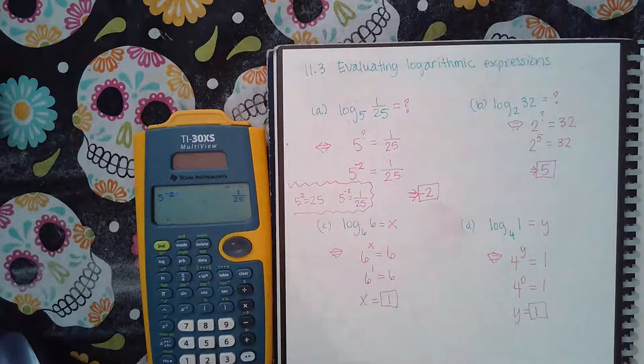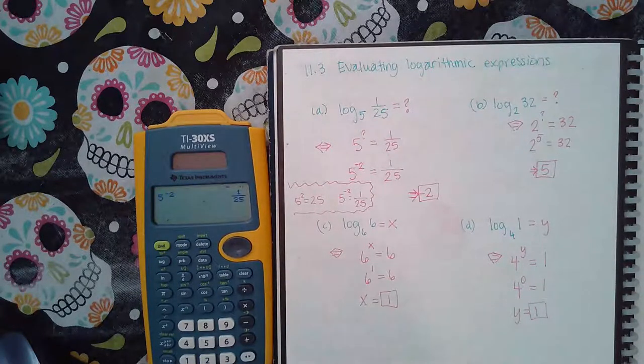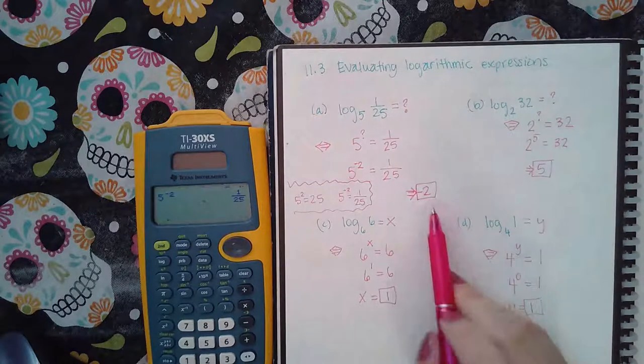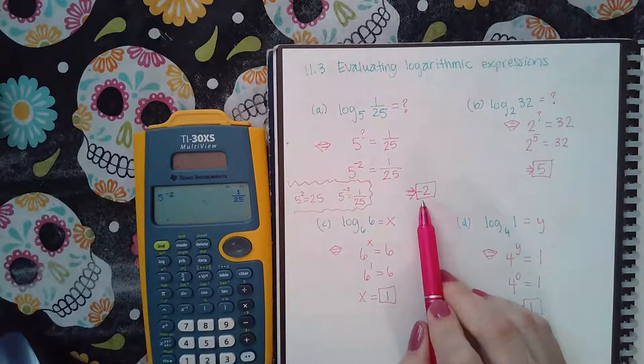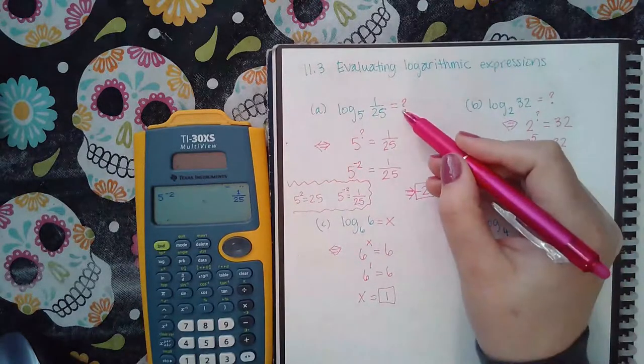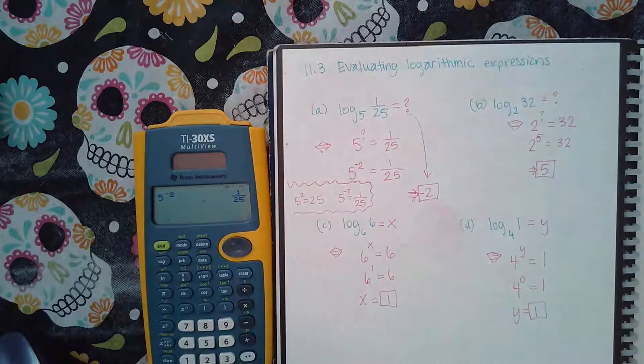And you should be able to verify that in your calculator. 5 raised to the negative 2, that is 1 over 25. So what was the exponent that we found? The exponent that we found was negative 2, so the answer here is negative 2. This question mark is the value negative 2.